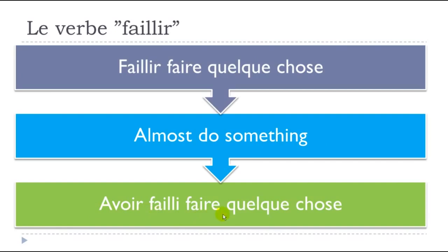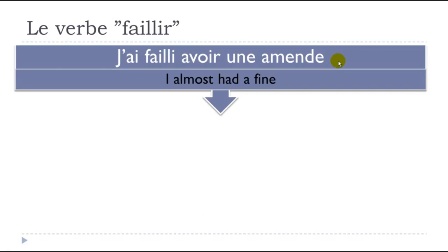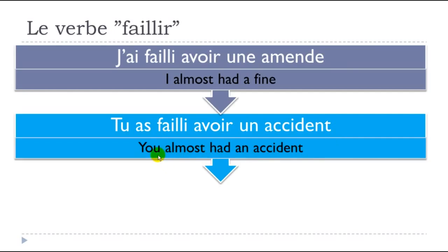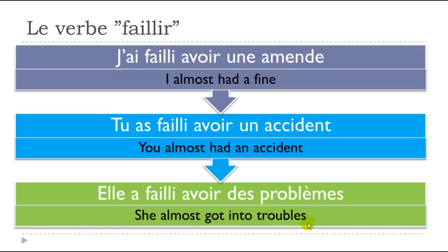Let's see some examples. Faillir faire quelque chose — 'almost do something.' Avoir failli faire quelque chose is what you would use in the passé composé. For example: j'ai failli avoir une amende — 'I almost had a fine.' Tu as failli avoir un accident — 'you almost had an accident.' Elle a failli avoir des problèmes — 'she almost got into trouble.'